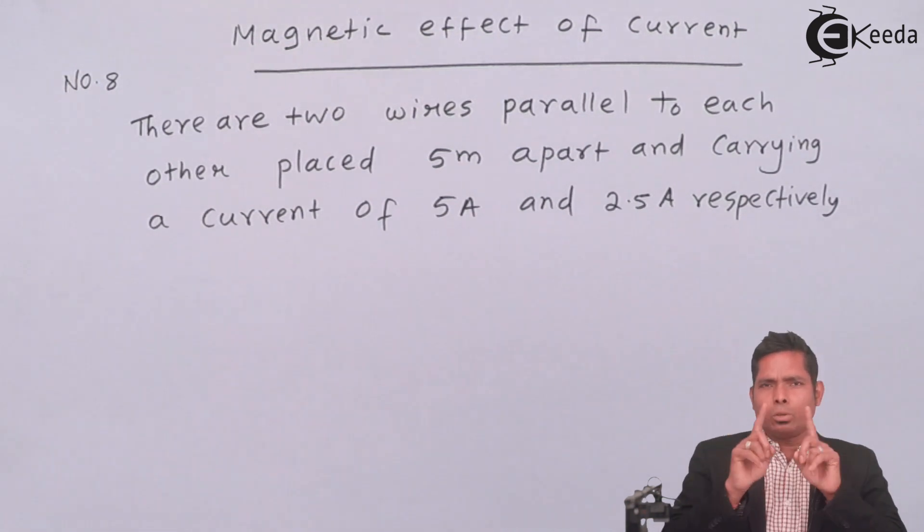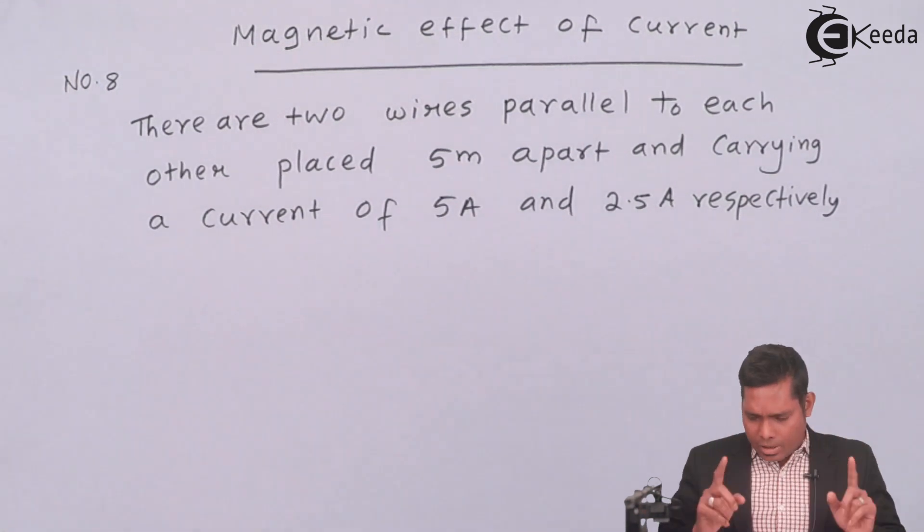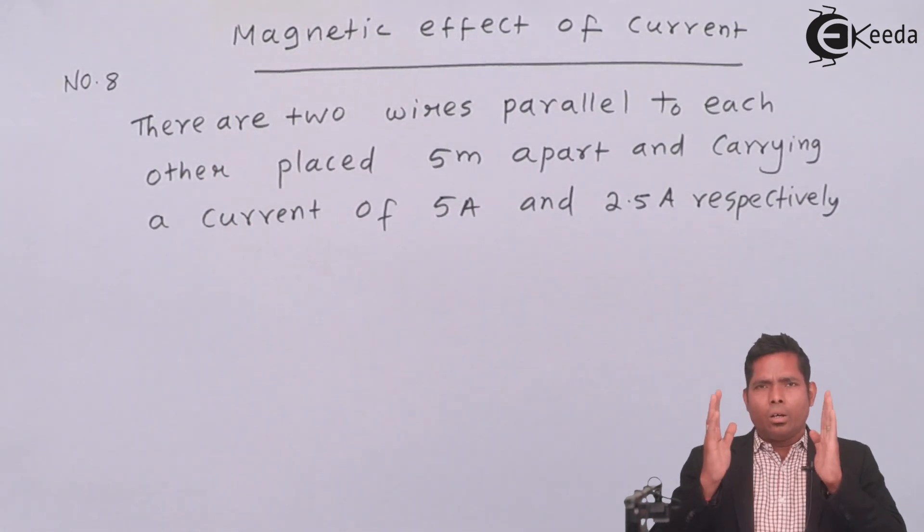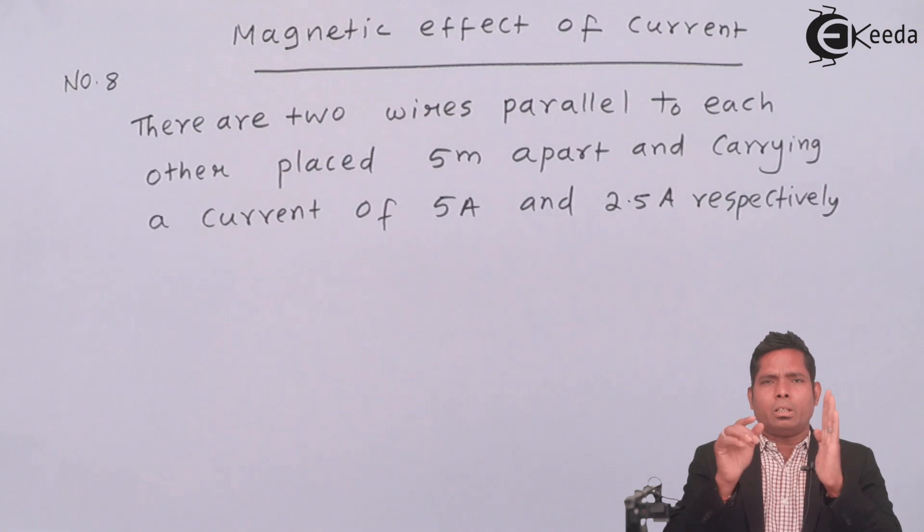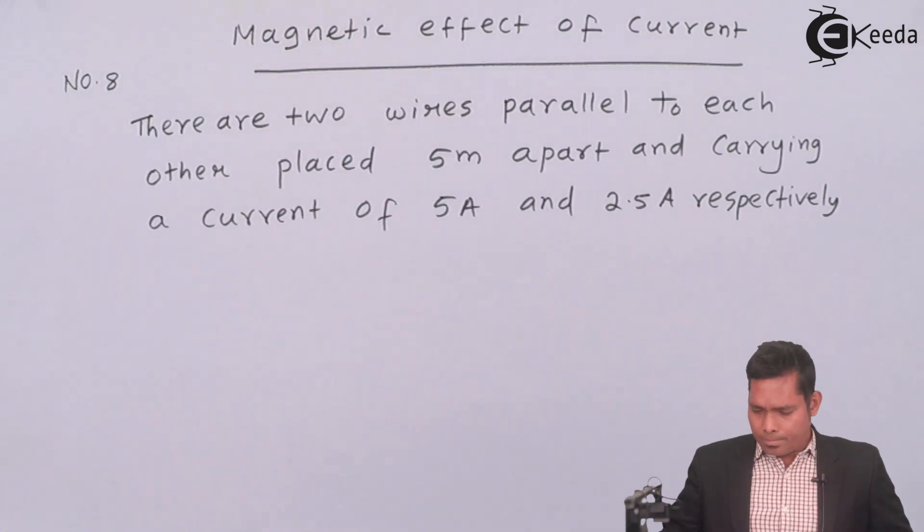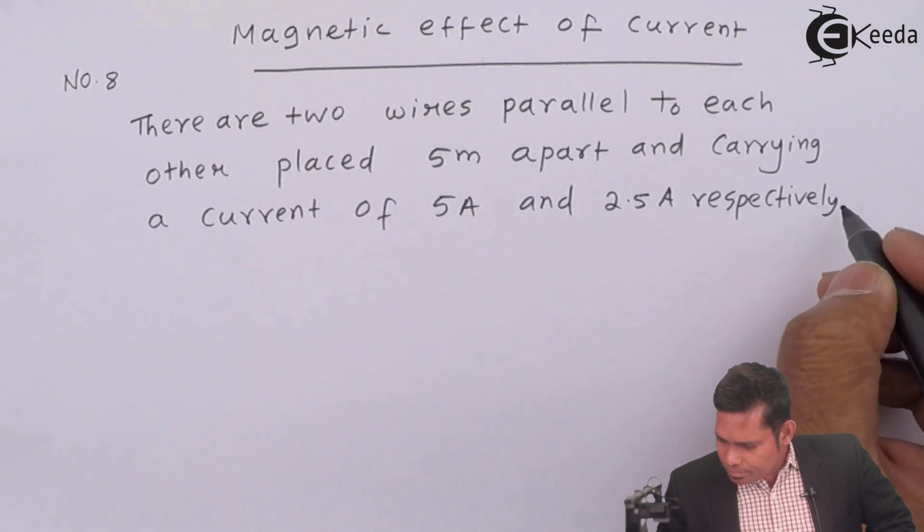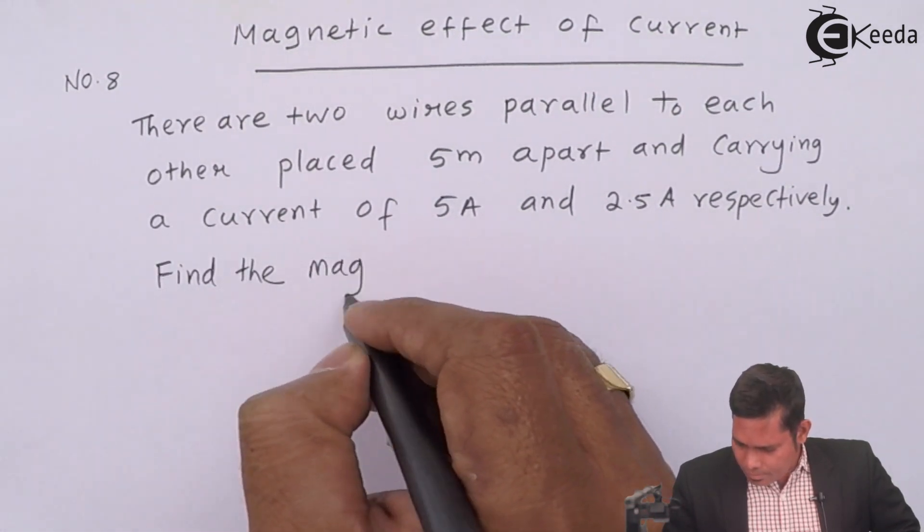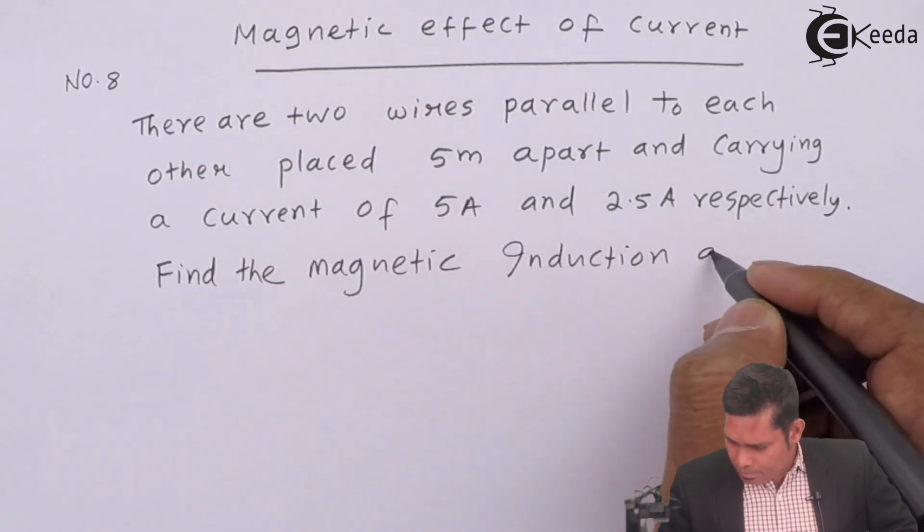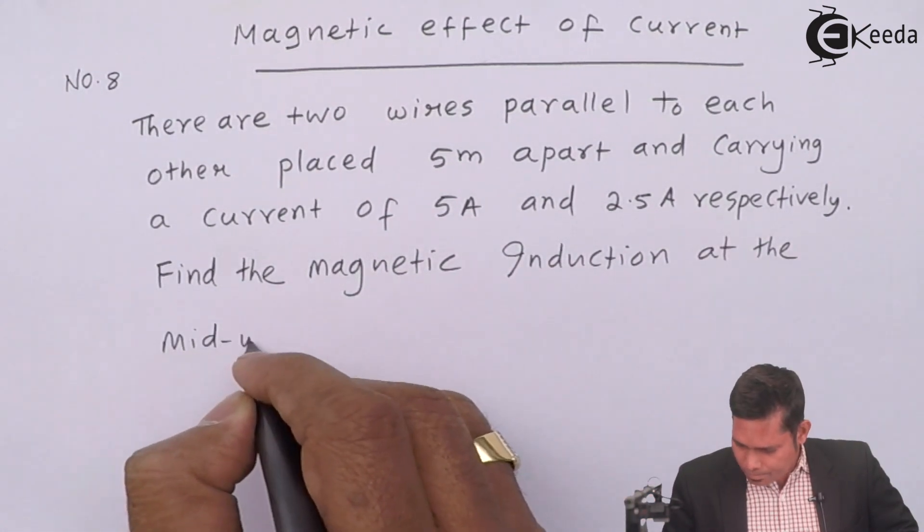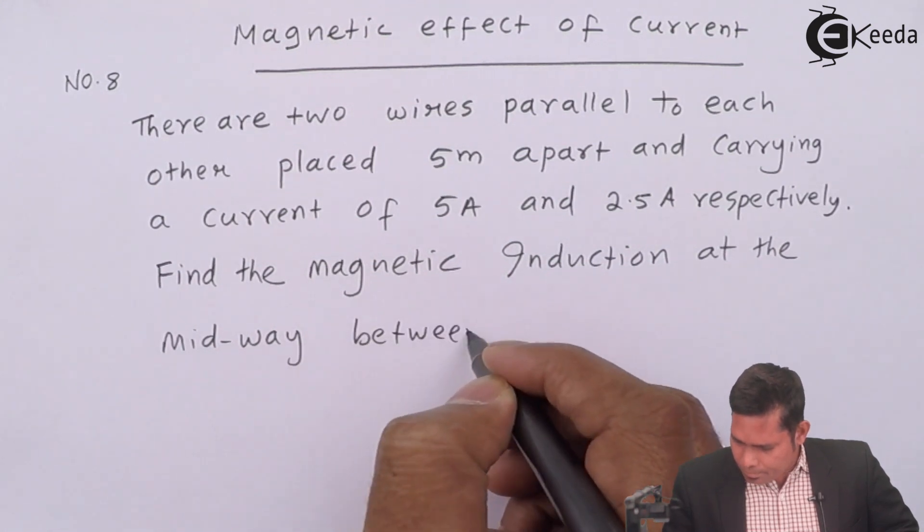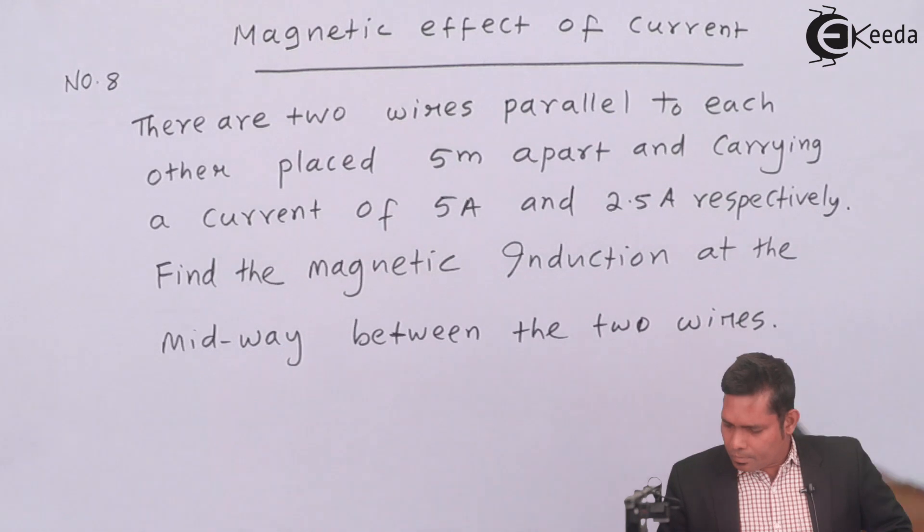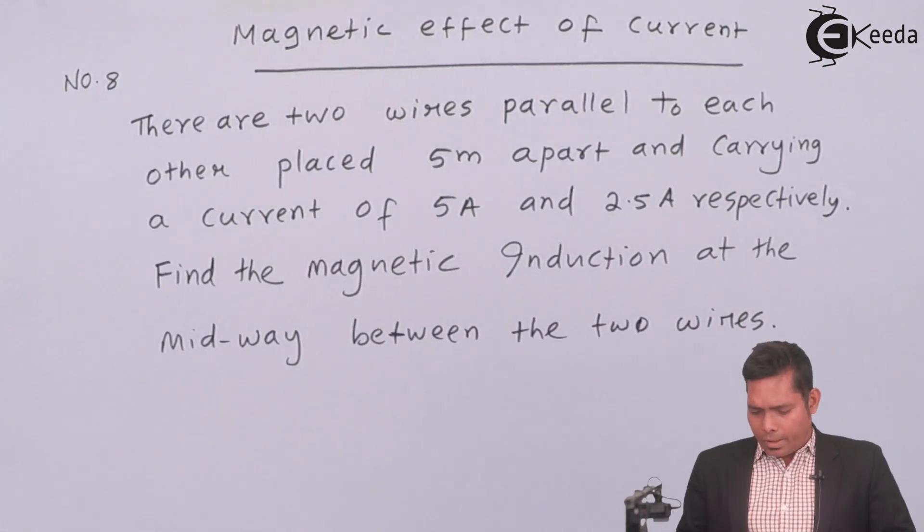The direction of the current in both the wires are in the same direction. Then, we have to find the magnetic field, magnetic induction in between, exactly the midway between the two wires. This is the question. You have to solve it.